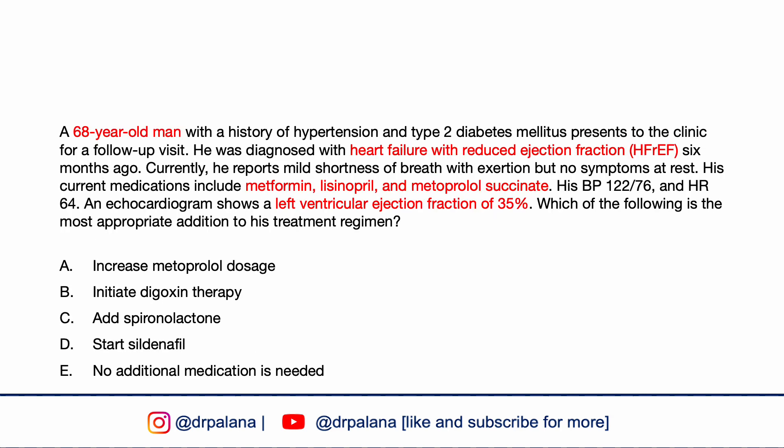A 68-year-old man with hypertension and type 2 diabetes presents for follow-up. He was diagnosed with HFrEF six months ago. He reports mild shortness of breath with exertion but no symptoms at rest. Current medications include metformin, lisinopril, and metoprolol succinate. Blood pressure is 122/76, heart rate 64. Echocardiogram shows LVEF of 35%. Which of the following is the most appropriate addition: increase metoprolol dosage, start digoxin, add spironolactone, start sildenafil, or no additional medication?